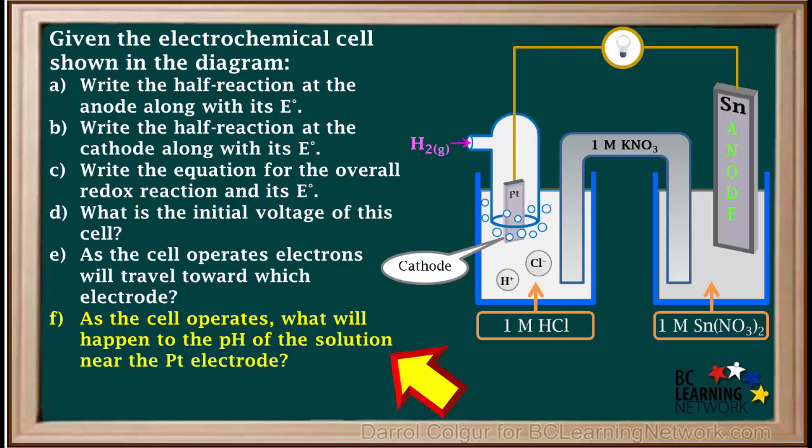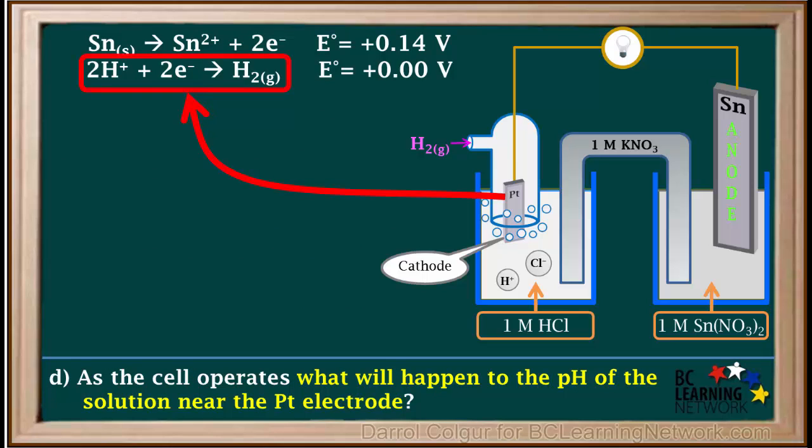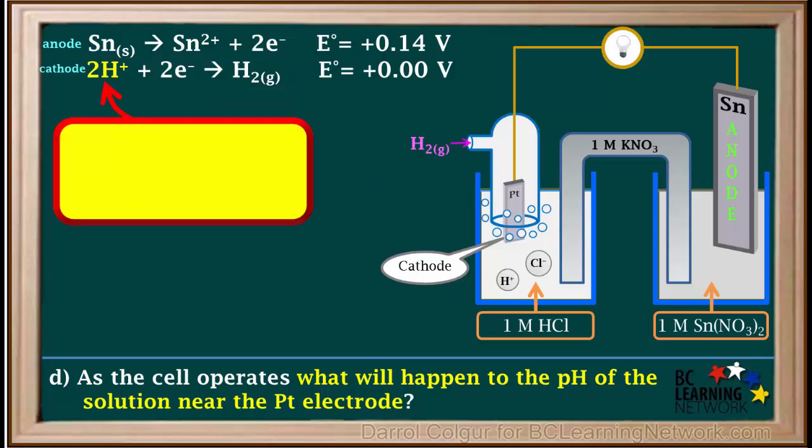The F part of this question asks us what will happen to the pH around the platinum electrode as this cell operates. To answer this question, we focus on the half reaction taking place on the platinum electrode. We see that H⁺ is on the left side of this half reaction. So H⁺ is being consumed as it is reduced to hydrogen gas.